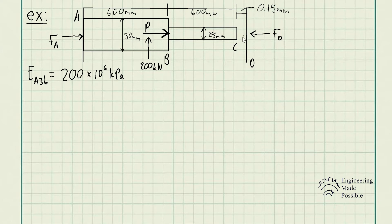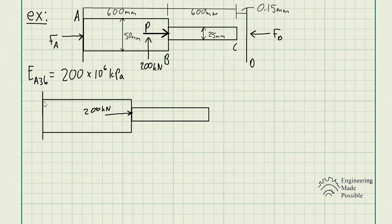Step one is to remove the constraint at point D and then solve for the deformation of the entire assembly assuming there is no constraint at that end. We redraw it showing the assembly constrained at one end only, with the 200 kilonewton external force applied, and ask how much this assembly would actually deform.